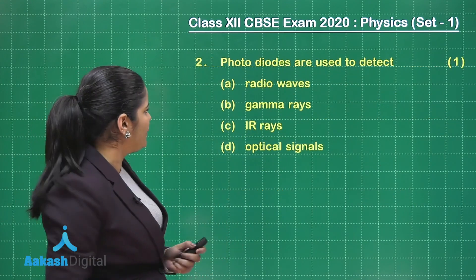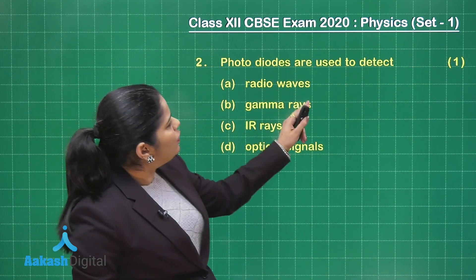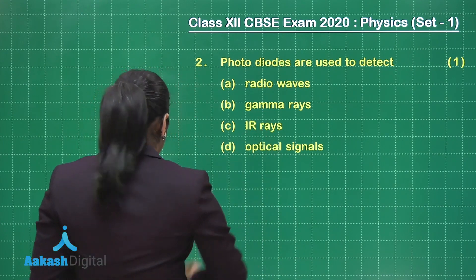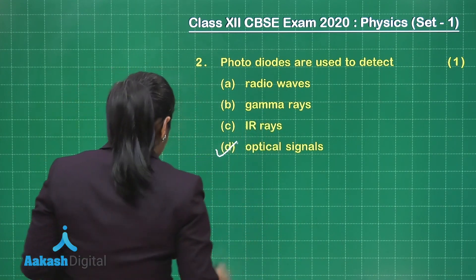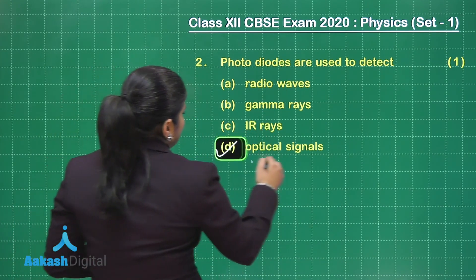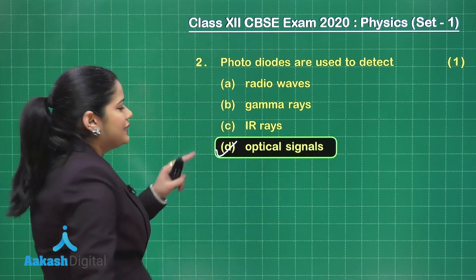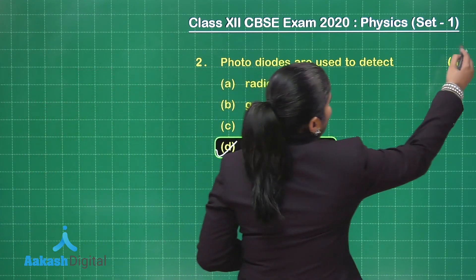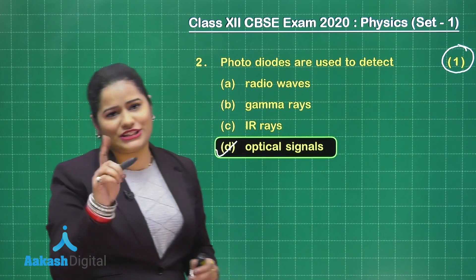The next question says photodiodes are used to detect — obviously they are used to detect optical signals, so that is the correct option. If you marked this, you are going to fetch one mark for this question as well.